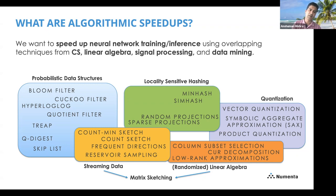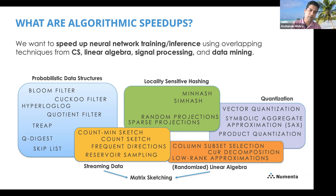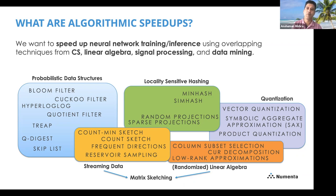From the CS side — probabilistic data structures and randomized algorithms — you have things like Bloom filters, cuckoo filters, quotient filters for approximate membership querying. You have qdigest, KLL sketches, treaps, HyperLogLogs, count-distinct structures. There's a specific sub-area useful for streaming data: count sketches, frequent items, count-min sketches, frequent directions, reservoir sampling, and so on.